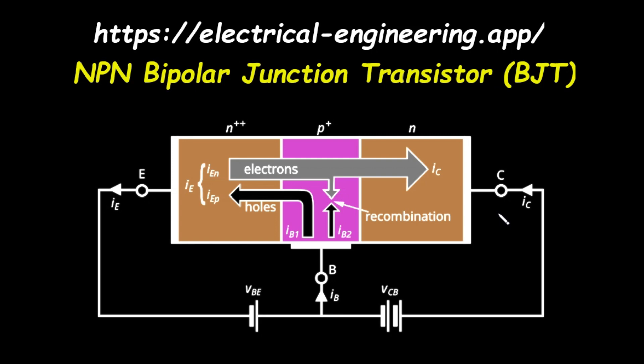In summary, we've seen that by carefully controlling the doping levels, the physical dimensions, and the applied voltages, we can make a device where a small input current at the base controls a much larger output current at the collector. This is the fundamental principle of the bipolar junction transistor operating in its active mode.